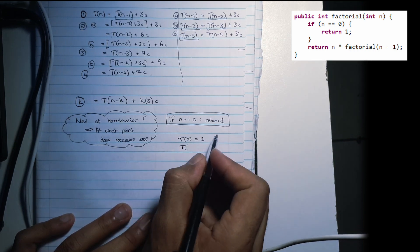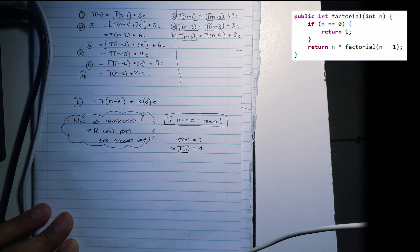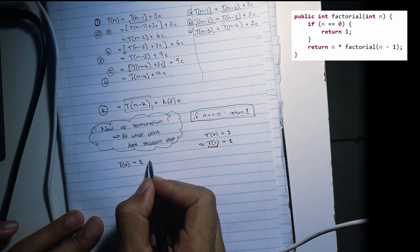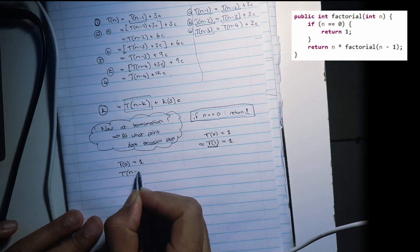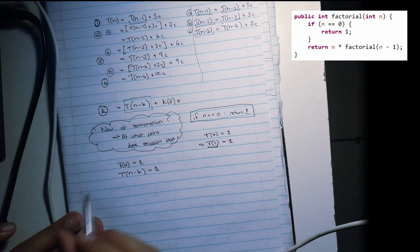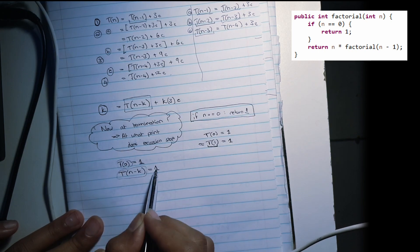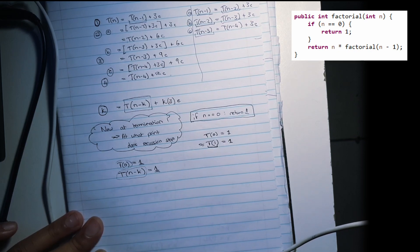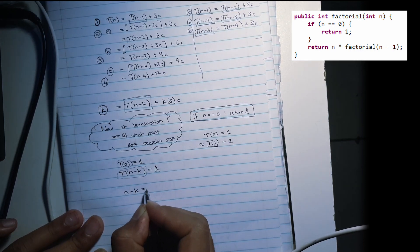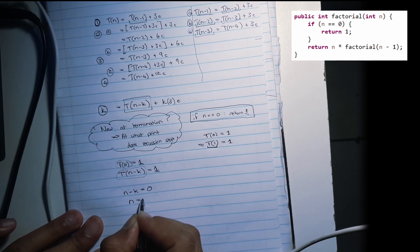We can say this is approximately the same as T of one equals one. We need to find out the value of K. That statement will also terminate, meaning it will also equal one. Since whatever input we put in both functions gives a result of one, they need to be equal. So N minus K equals zero, meaning K equals N.